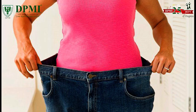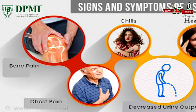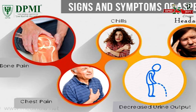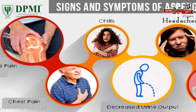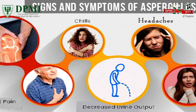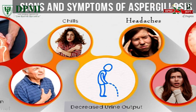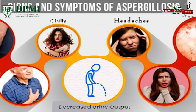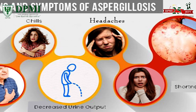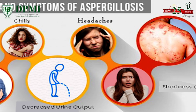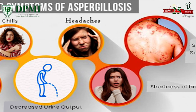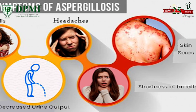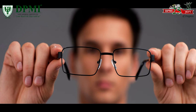Weight loss. Other symptoms depend on the part of the body affected and may include bone pain, chest pain, chills, decreased urine output, headache, shortness of breath, skin sores, and vision problems.